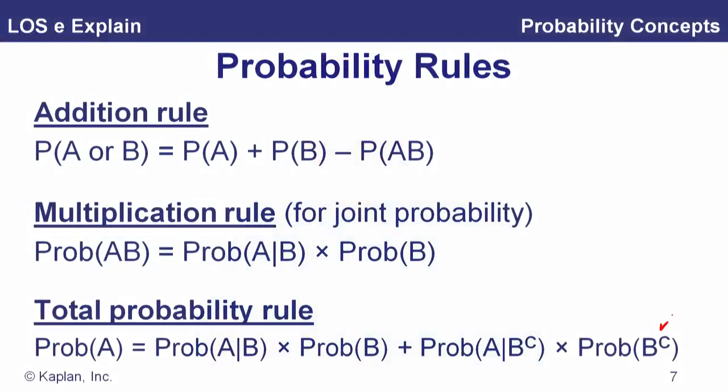The total probability rule lets us find the unconditional probability of A by asking: what's the probability of A and B, plus the probability of A and not B? We use the multiplication rule on each part — P(A|B)·P(B) and P(A|B^c)·P(B^c) — and since B and not-B cover everything, adding those together gives us P(A).